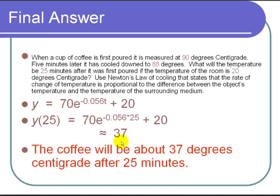So 70 times e to the negative 0.056 times 25 plus 20. Put in a calculator, I get 37. So our answer is the coffee will be about 37 degrees centigrade after 25 minutes. And that was Newton's law of cooling in differential equations.